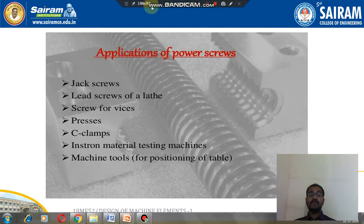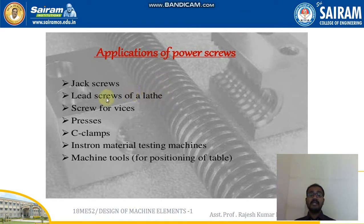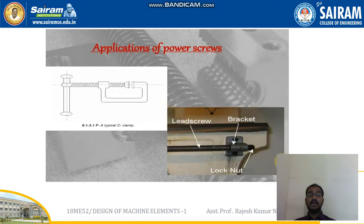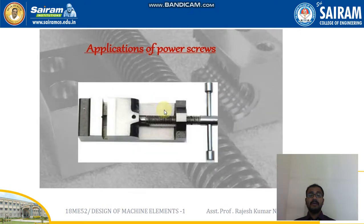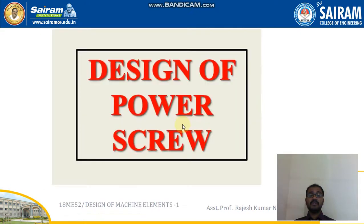Applications of power screws include: screw jacks, lead screws of a lathe, screws for visors, presses, C-clamps, material testing machines, and machine tools for positioning of a table. As you can see in the examples shown, this is the lead screw, this is a bracket, and this is a lock nut — very common in everyday use. This is a typical C-clamp. Also shown: more than 90% of the ACME nut threads worn away, allowing the jack screw to move freely. These are some of the applications of power screws.